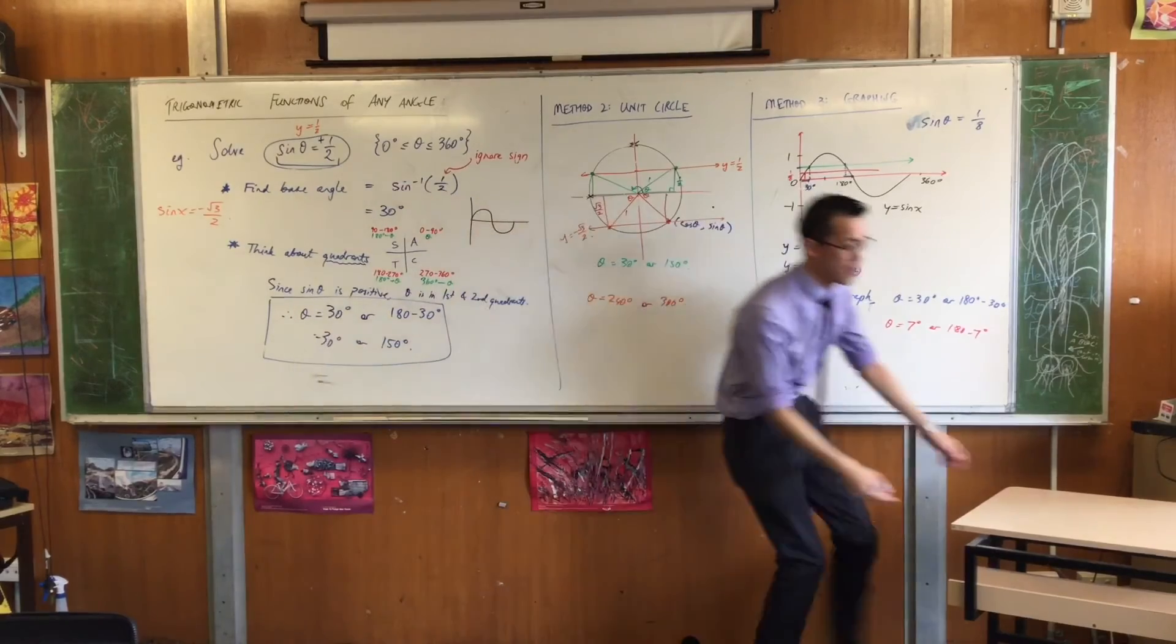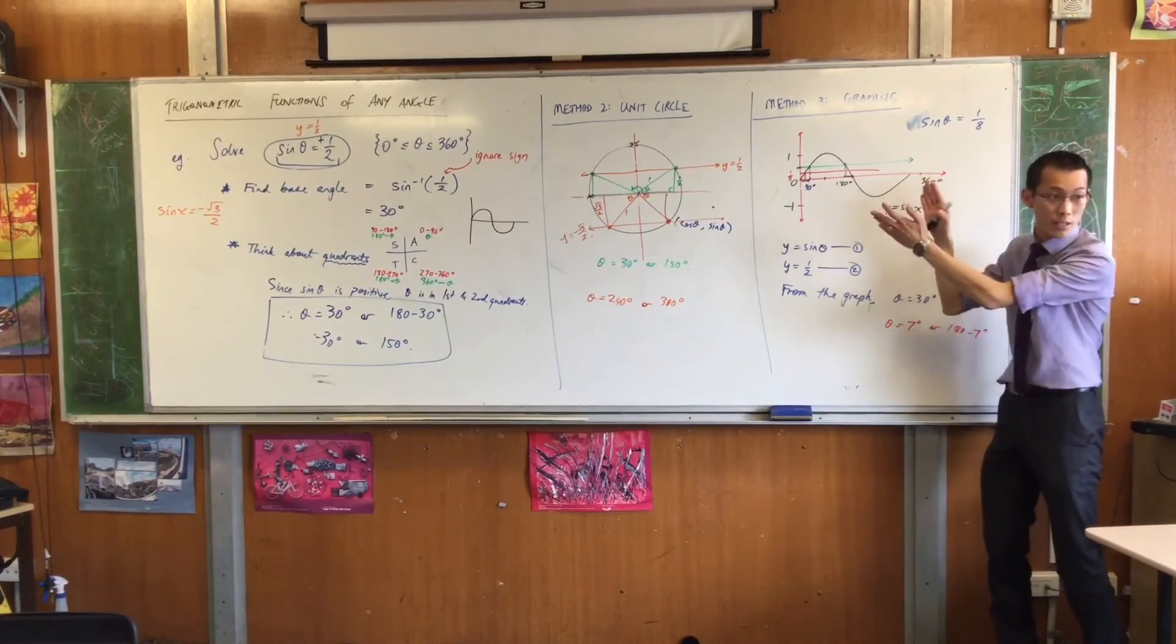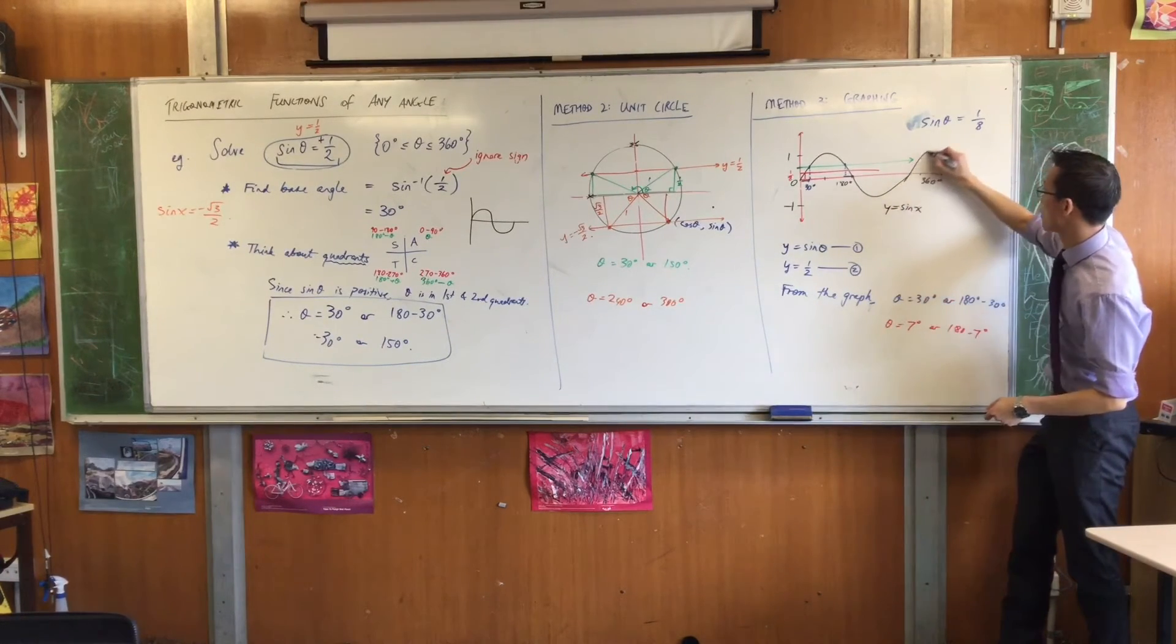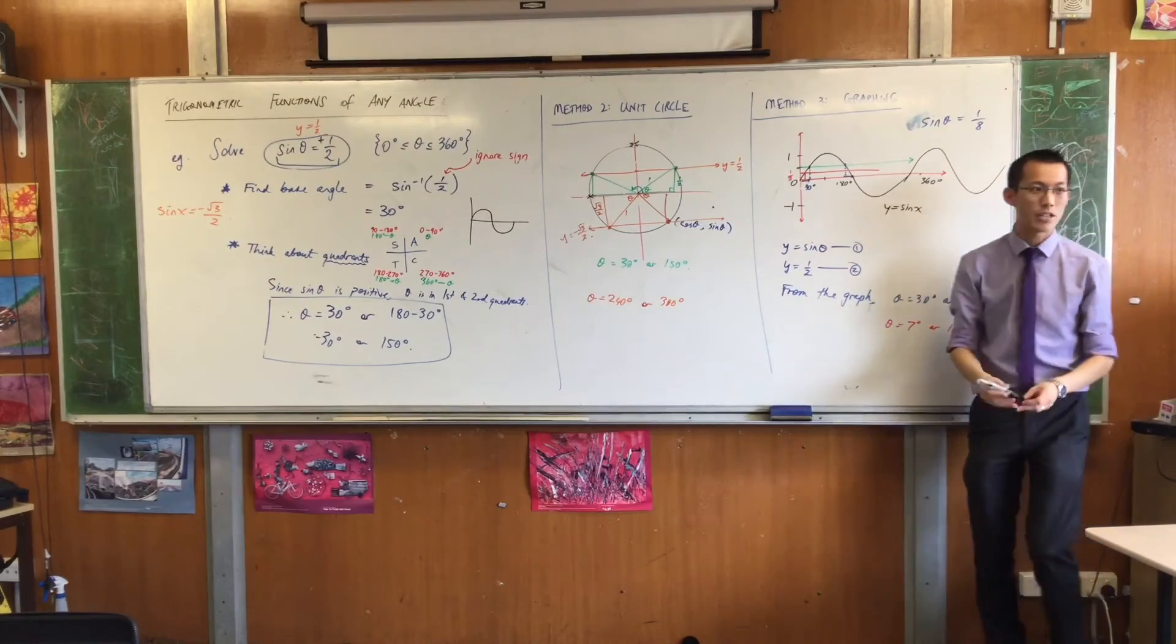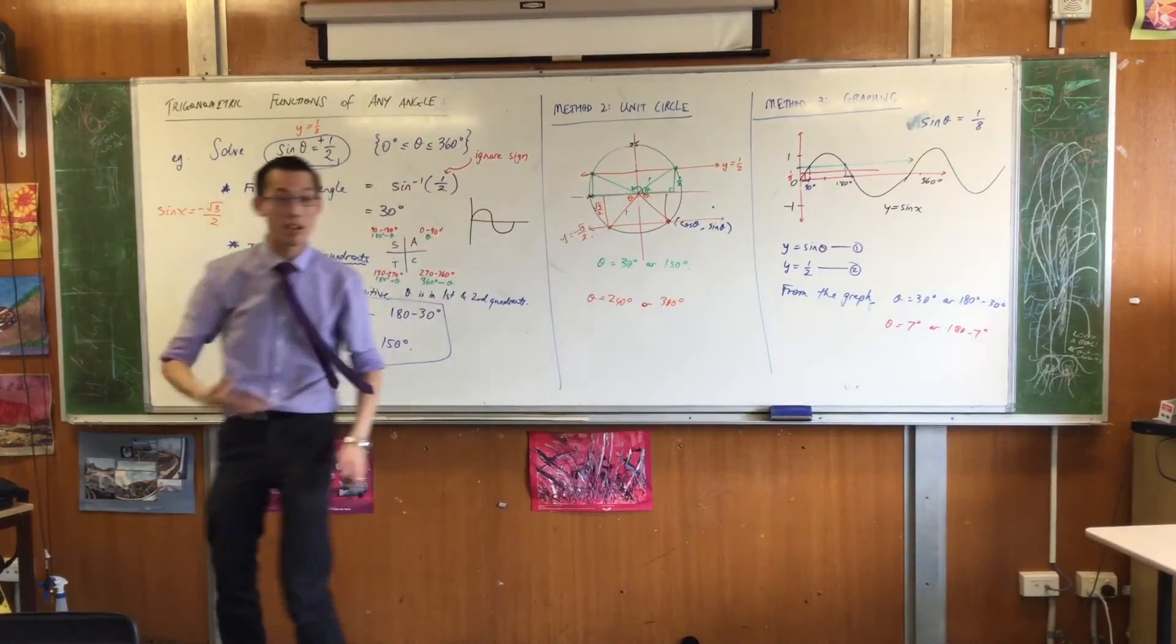The trig functions, remember I only graphed this part here from 0 to 360, but he just keeps going. He just keeps doing his merry thing. We have a special word for this, it starts with a P, right? We call this a periodic function because it repeats every, its period is 360 degrees.